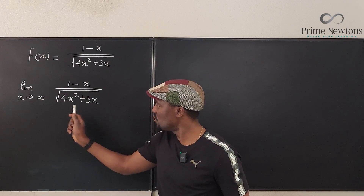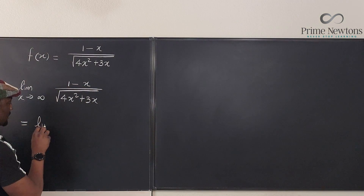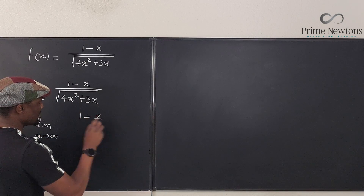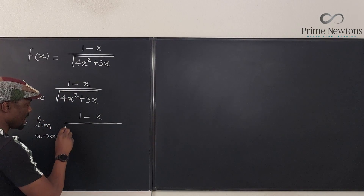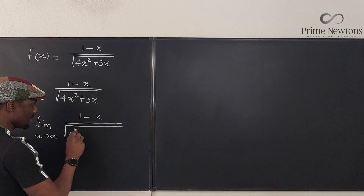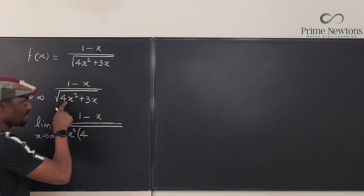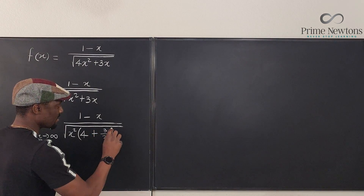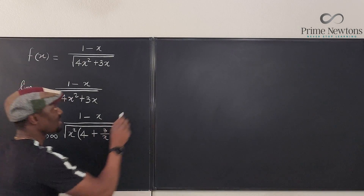To factor out x² from under the square root, write the denominator as the square root of x² times (4 + 3/x). If you factor x² out from (4x² + 3x), you are left with x² times (4 + 3/x). This is now a product of two terms under the square root.